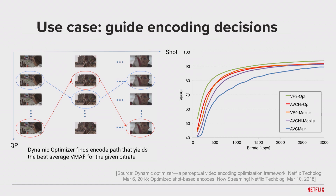A second use case is using VMAF to optimize encoding decisions. The Dynamic Optimizer framework has been what we use at Netflix to produce VMAF-optimized streams. Essentially, it finds the best encoding paths that give you the best average VMAF for a given bit rate. Our study shows there is substantial gain achievable by doing this type of optimization on top of switching to a more advanced codec. In other words, a better codec combined with smart optimization gives you additional gain in video quality, or, given the same video quality, a more efficient reduction of video bit rate.